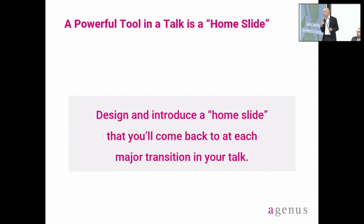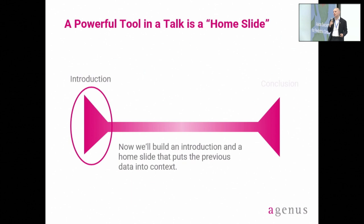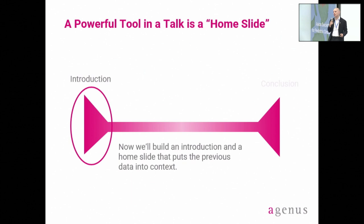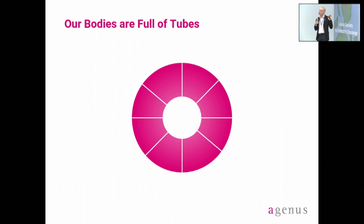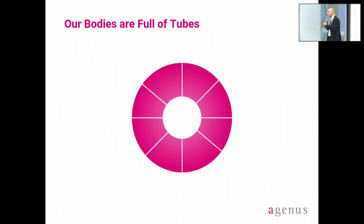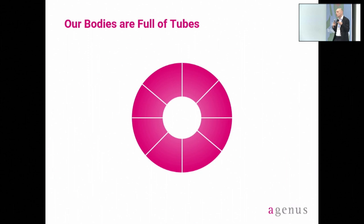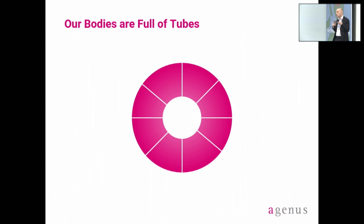A powerful tool in talks is what's called a home slide that people can come back to every single time. You're building on an introduction and a home slide to put things in perspective. For example, our bodies are full of tubes, tubes have epithelia on them — that's the growing edge of a cancer. All cancers we see are derived from epithelia. Every cancer within us, whether it's a breast cancer, which is an intraductal carcinoma coming from the breast ducts, a colon cancer, or other tumors, actually forms from the epithelium from within tubes. Sarcomas are different — they form from the actual cells themselves.